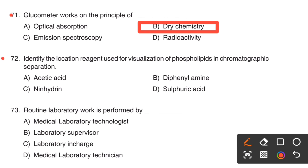Next one. Identify the location reagent used for visualization of phospholipids in chromatographic separation. Option A, Acetic acid. Option B, Diphenylamine. Option C, Ninhydrin. Option D, Sulphuric acid.